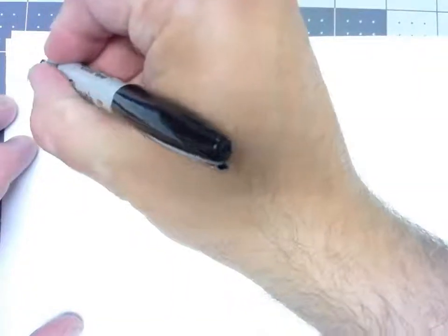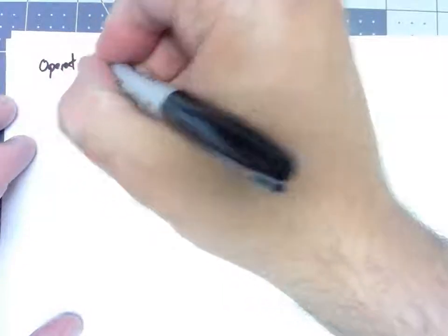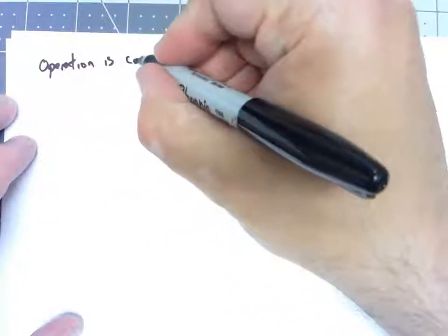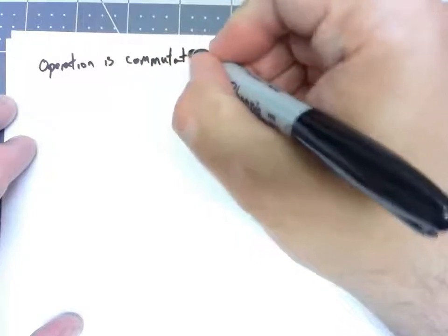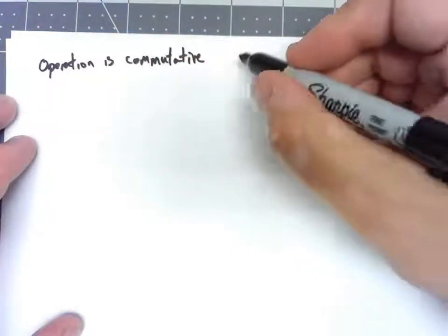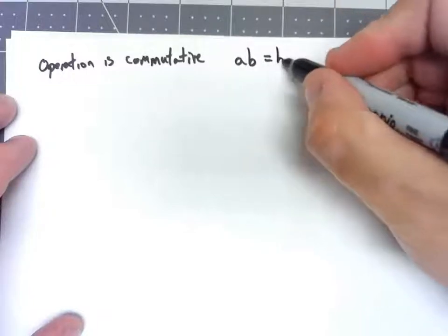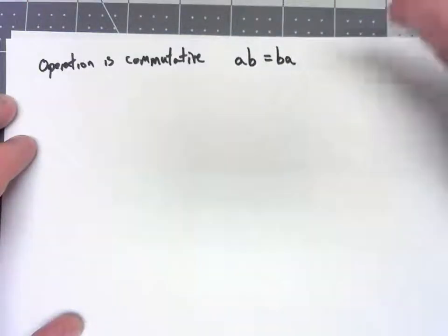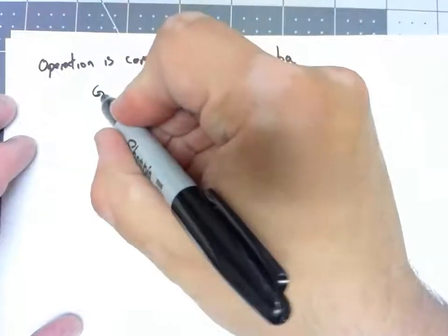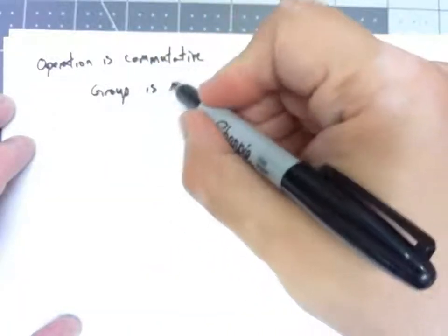There's an important definition I mentioned in the text from last week but I should probably put it in one of the videos too. If the operation for a group is commutative, that is if whenever you take two elements of the group AB is equal to BA, no matter what two elements of the group you pick, we say that that group is abelian.